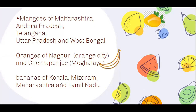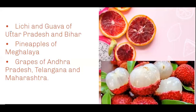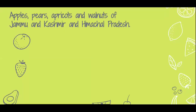Bananas are majorly produced in Kerala, Tamil Nadu, Mizoram, and Maharashtra. Lychee and guava are mainly produced from Uttar Pradesh and Bihar. Pineapples come from Meghalaya, and grapes are from Andhra Pradesh, Telangana, and Maharashtra — these are the states mainly producing grapes.